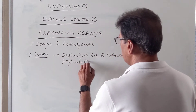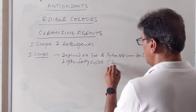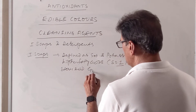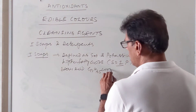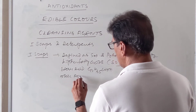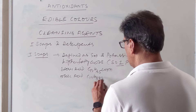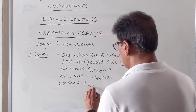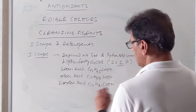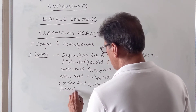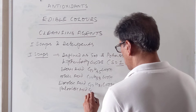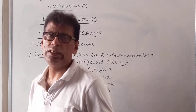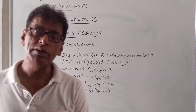Soaps are generally made from fatty acids. The common fatty acids are stearic acid (C17H35COOH), oleic acid (C17H33COOH), linoleic acid (C17H31COOH), and palmitic acid (C15H31COOH). These four acids, in the form of their sodium salts, become soaps.